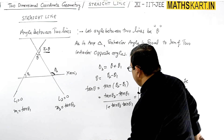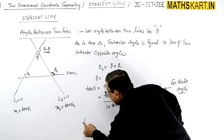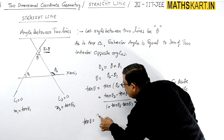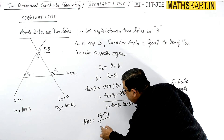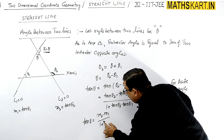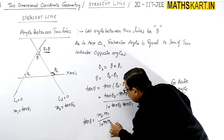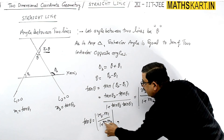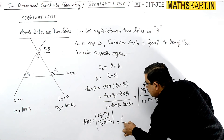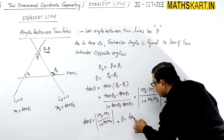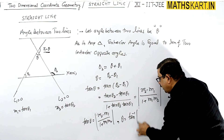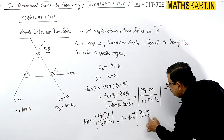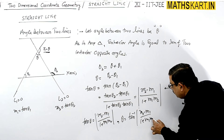The value of tan(θ) is (m2 − m1) / (1 + m1·m2). So θ = tan⁻¹ of |(m2 − m1) / (1 + m1·m2)|. We take the modulus to ensure we get the acute angle.